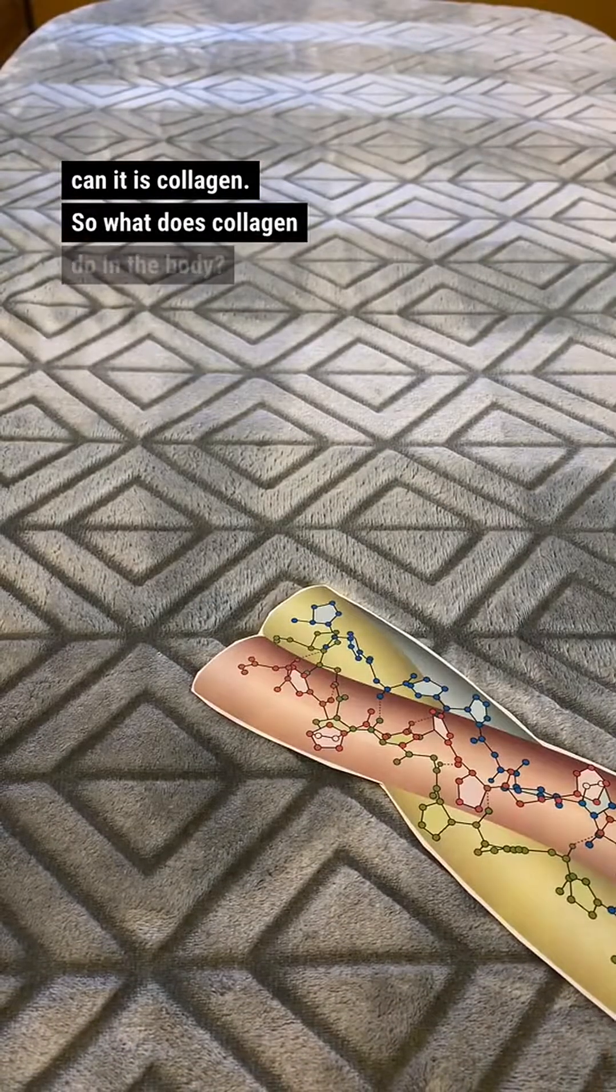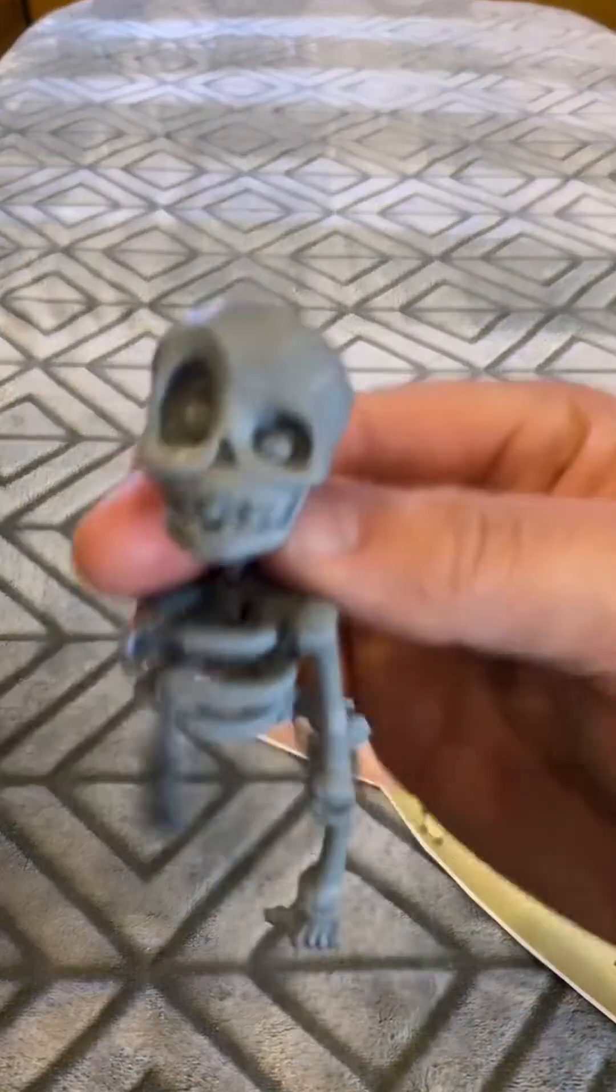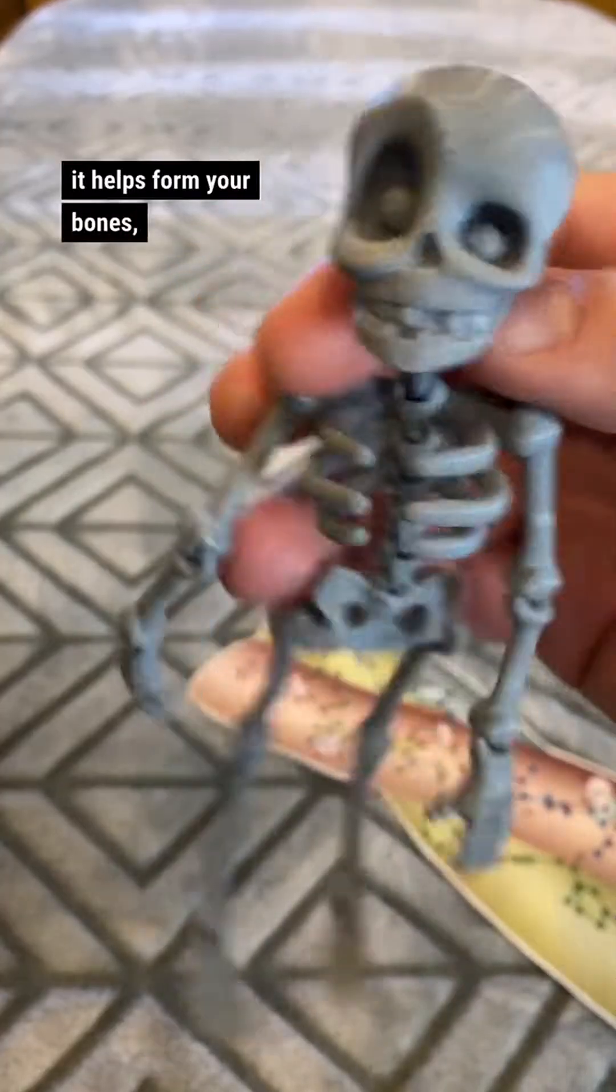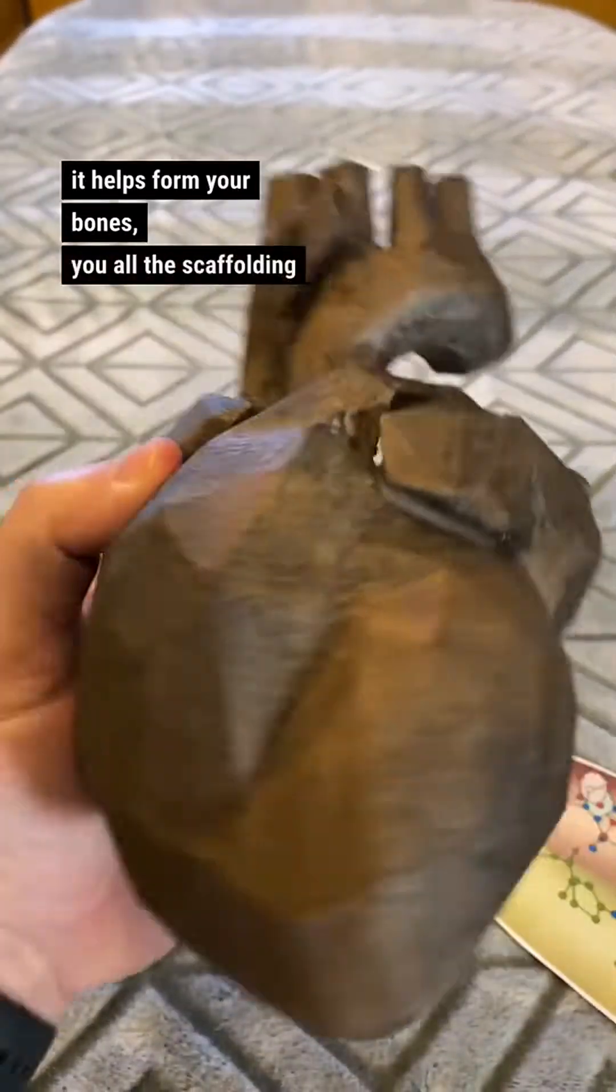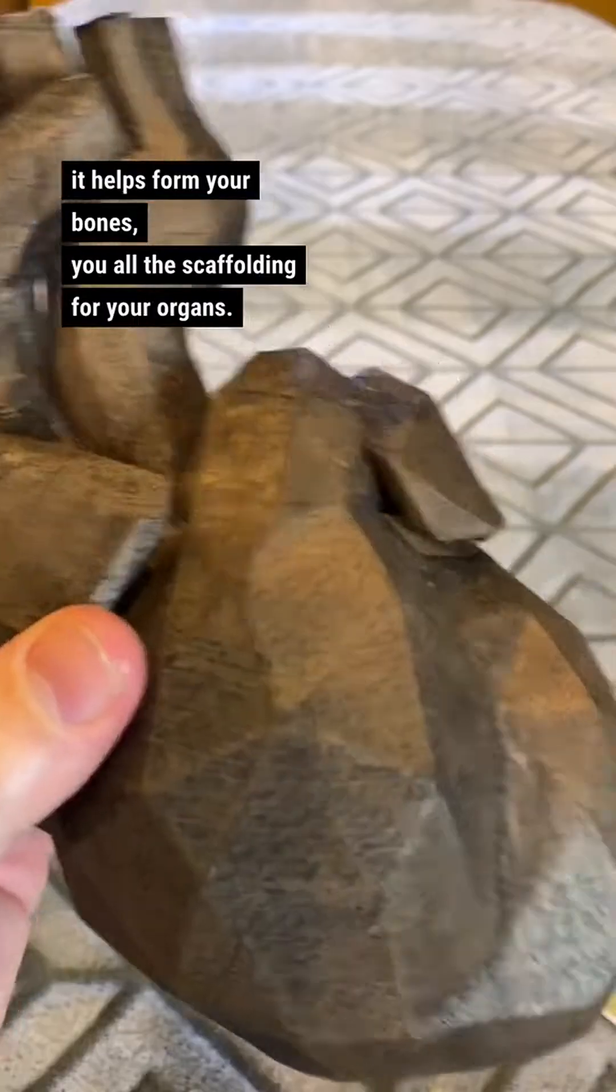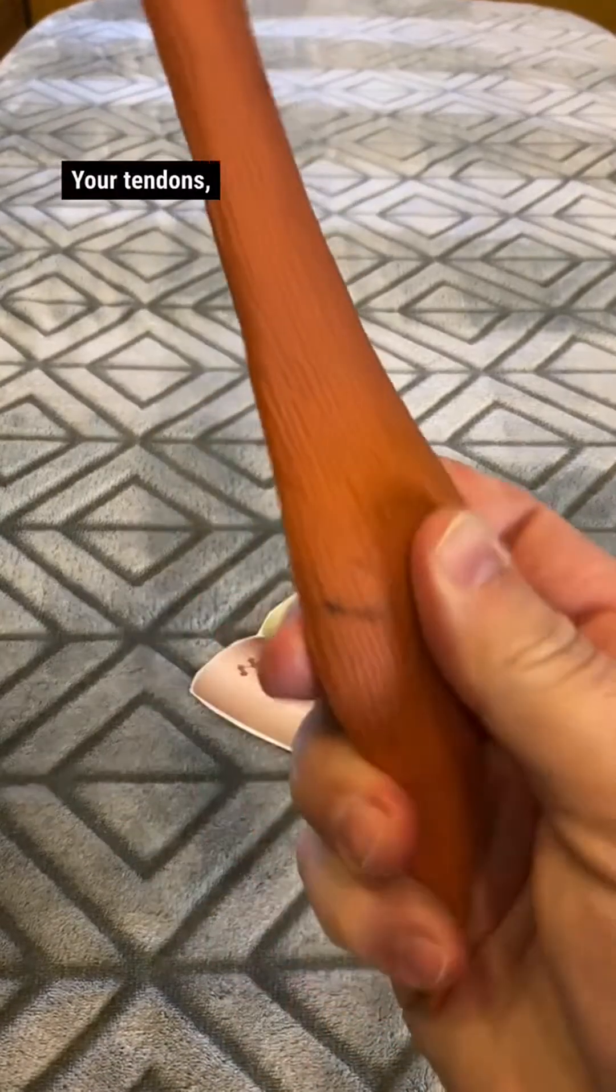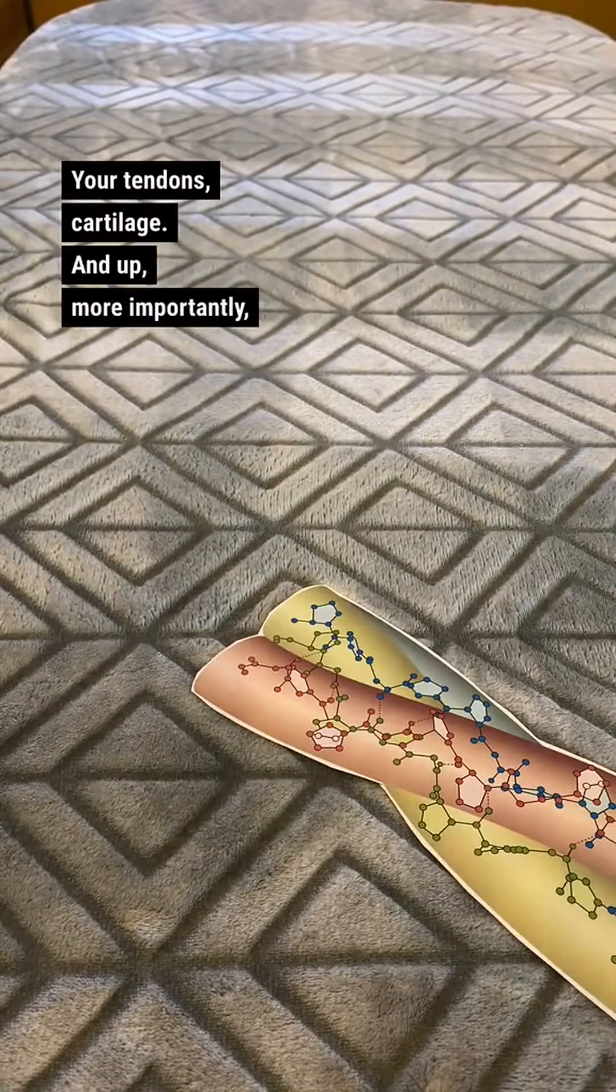So what does collagen do in the body? Well, it helps form your bones, all the scaffolding for your organs, your tendons, cartilage, and more importantly, your skin.